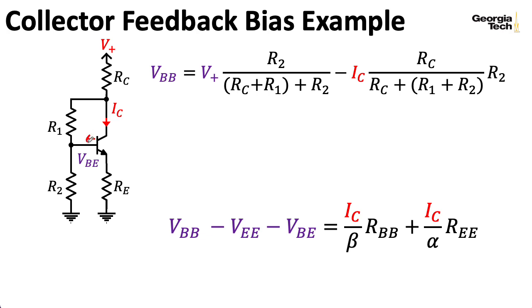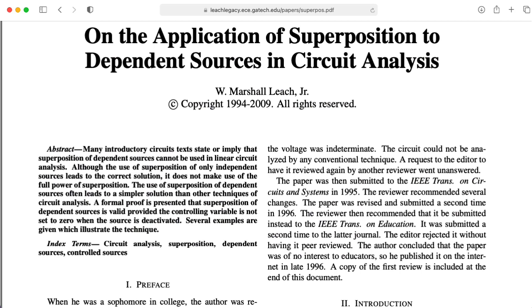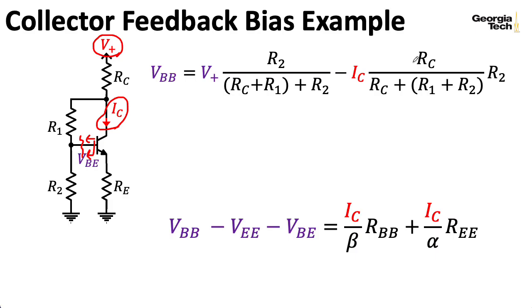Now, the computation of the Thevenin equivalent looking out of the base is something that's quite a bit more complicated than anything else we've done so far in analyzing these kinds of circuits. So pay close attention here. When we compute the Thevenin equivalent looking out of the base, we essentially cut the wire here so there's no current flowing through the base. And what we're going to do here is going to feel a little bit strange. We're going to use superposition. So we're going to use a superposition of two sources.